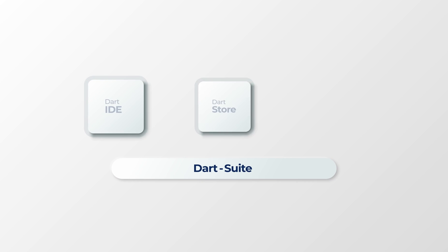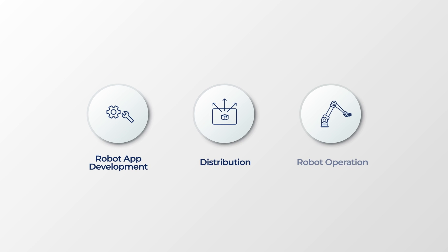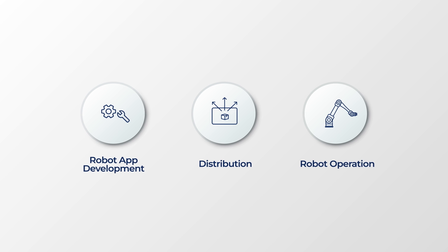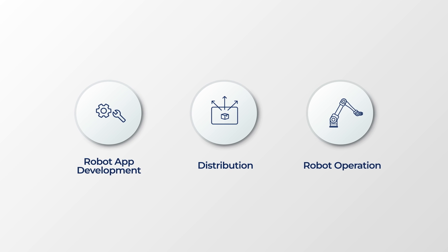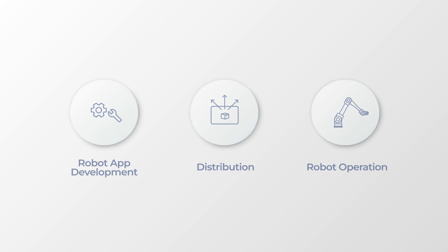Dart Suite comprises three service areas — IDE, Store, and Platform. These three services organically interconnect to support the development and distribution of robot applications and the use of robots by users.